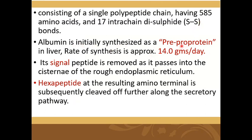Albumin is initially synthesized as a pre-pro-protein in the liver at a rate of approximately 14 grams per day. Then by post-translational modification — as you have already seen in the genetics chapter — the signal peptide is removed as it passes through the endoplasmic reticulum. A hexapeptide at the resulting amino terminal is then cleaved off further along the secretory pathway, forming the proper mature protein.